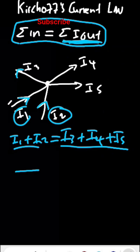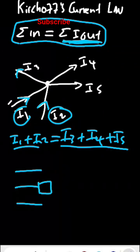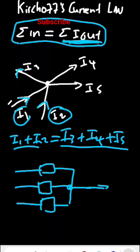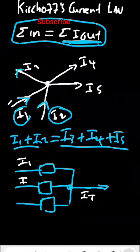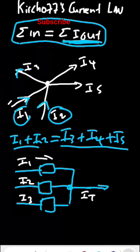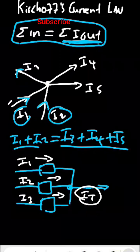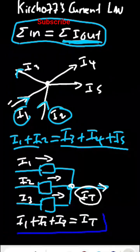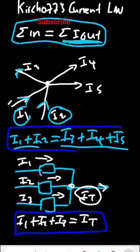Let's take this question: if you have been given resistors like this, then we have a point here. We have IT — I total. Here I have I1, I2, I3 moving towards that direction. So how can you determine I total? I total is moving away from the point. We know that the sum of current entering the point — I1 plus I2 plus I3 — will be equal to the sum of current leaving the point, which is I total. So this is how you go about applying Kirchhoff's current law.